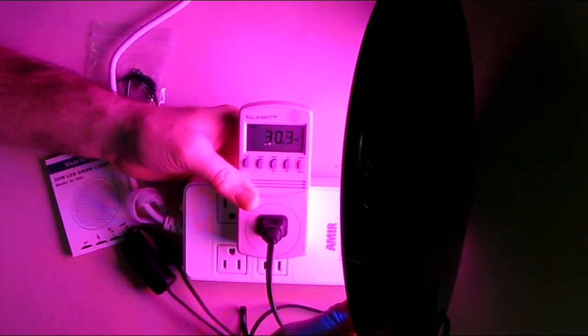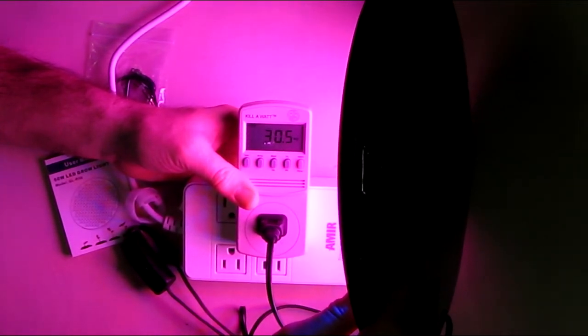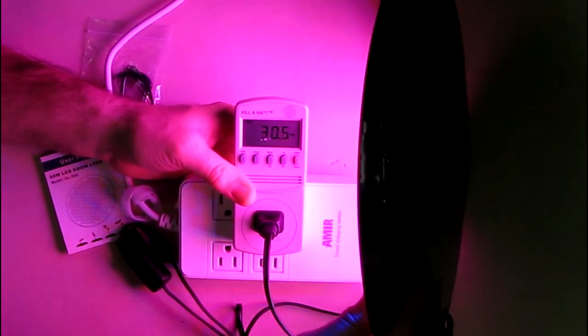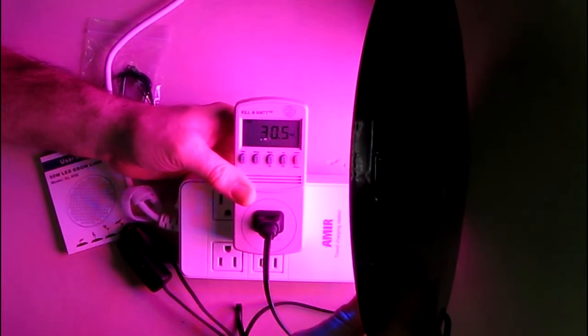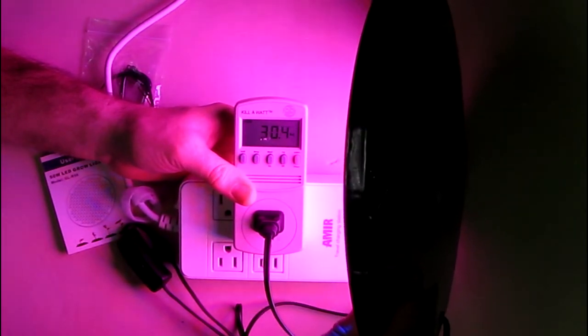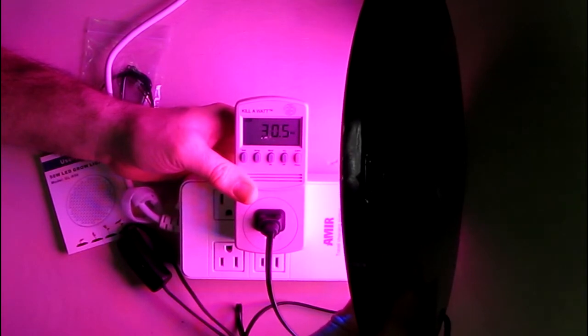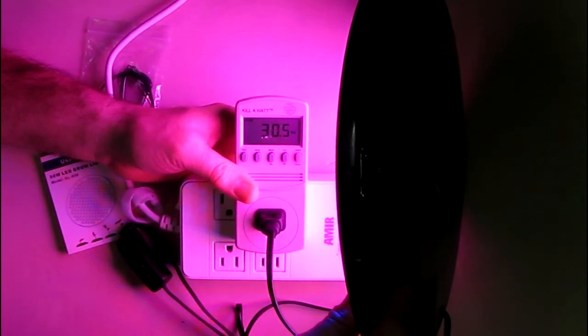That's very efficient, obviously, because this thing is putting out the equivalent of a 100-watt HPS light and it's only consuming 30 watts. This product also comes with a 12-month warranty and a 30-day satisfaction guarantee with 100% money-back guarantee from Kingbo, the manufacturer and seller of this grow light.